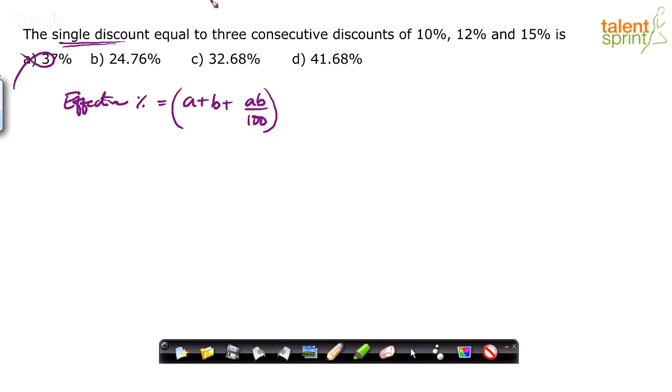The only thing that you have to keep in mind here is we are talking about discounts. Remember, while you are substituting the values a and b, you have to ensure that you use proper signs there. Is it a positive value or a negative value? Now that depends on the type of percentage. Here, we are talking about discount percentage.